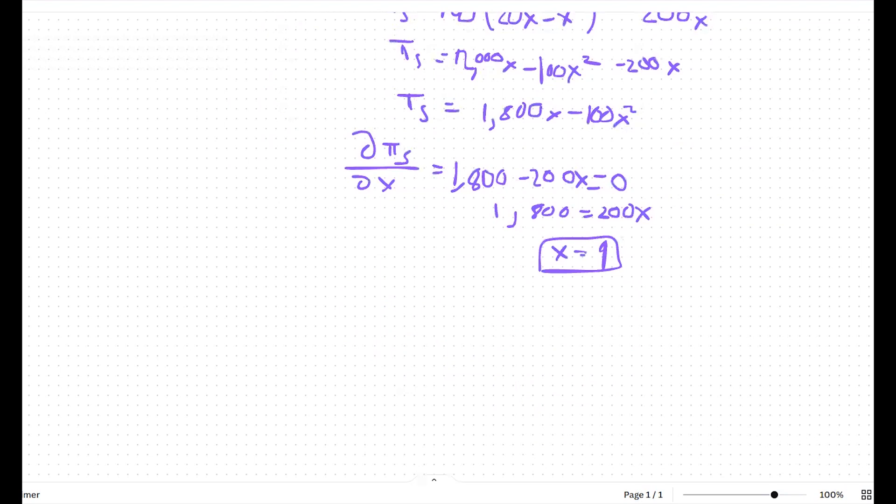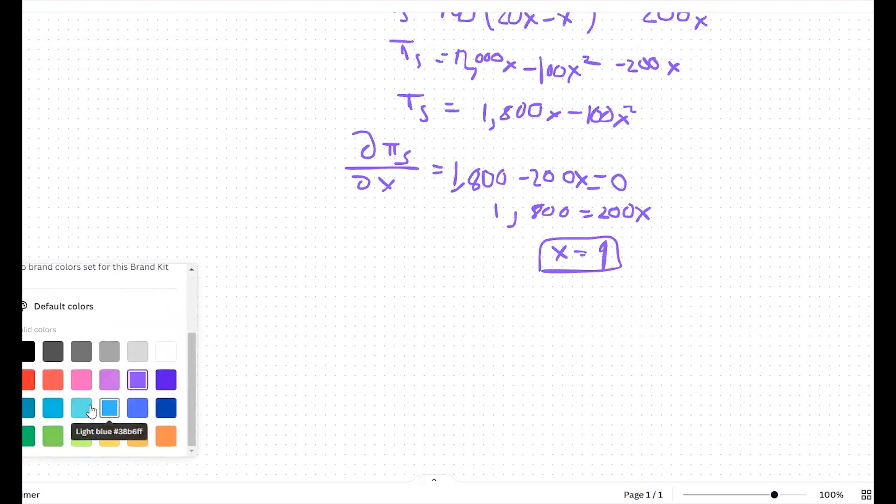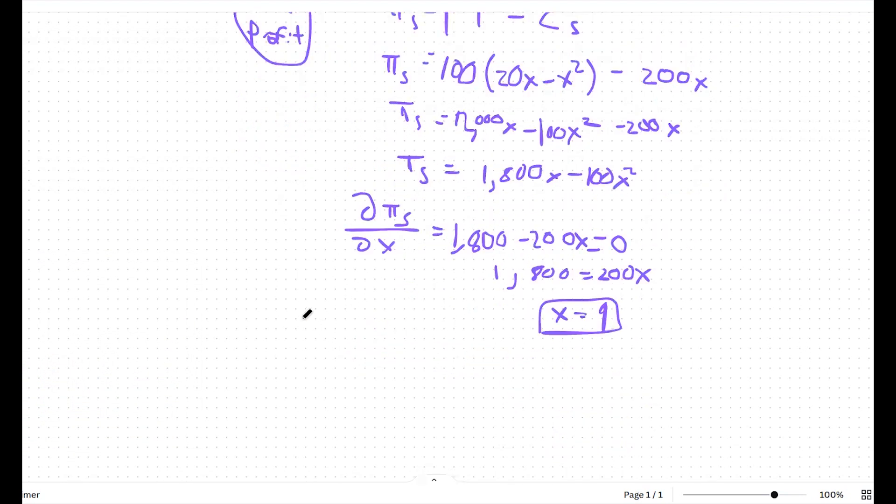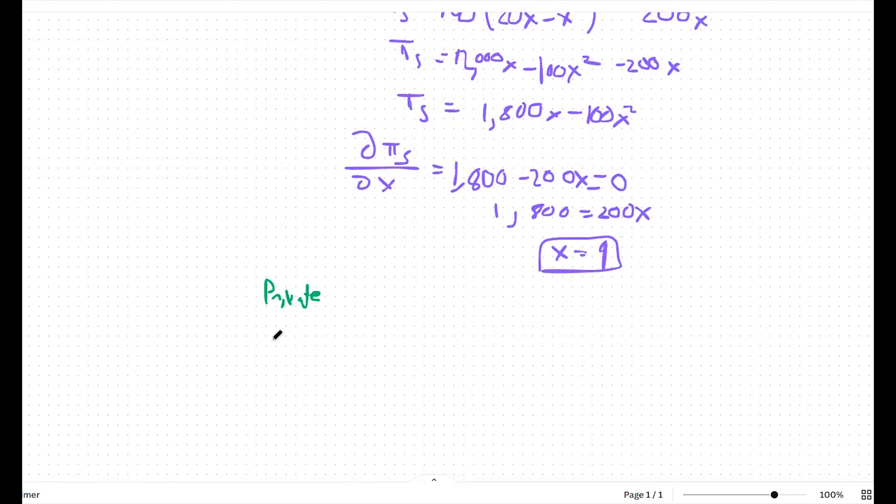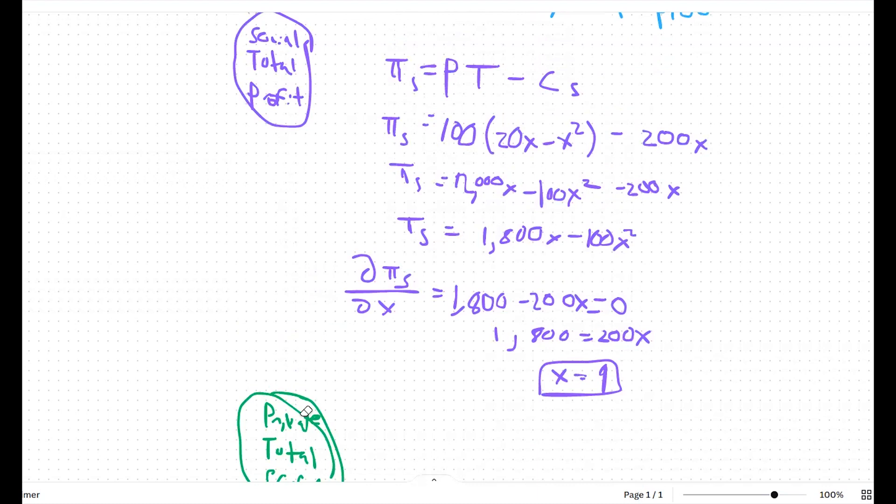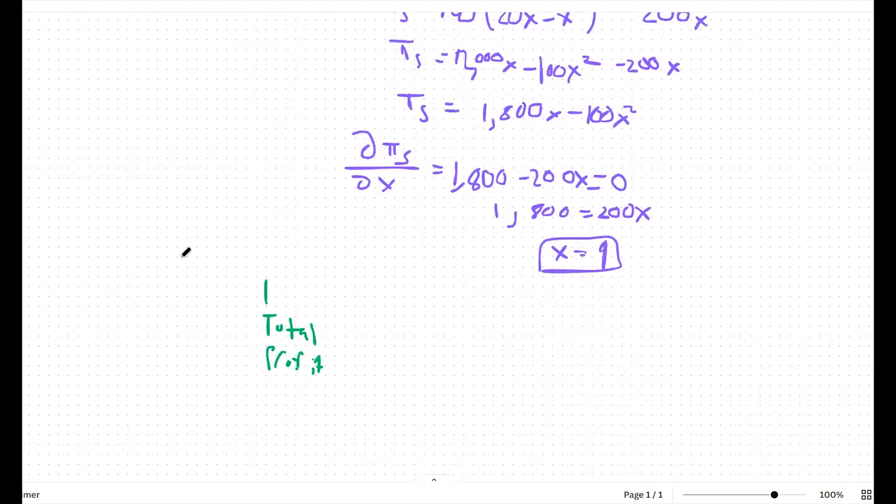Let's compare this to how many people will actually go out and hunt. So the number of people actually going out and hunting, we can also find through a profit function. This will be private total profit.